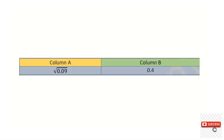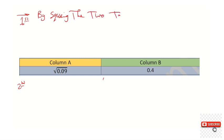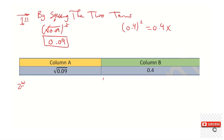Regarding question number five: comparing root 0.09 and 0.4. If one term has a root and the other doesn't, there are two solutions. The first solution is by squaring both terms. Squaring root 0.09 gives 0.09, and squaring 0.4 gives 0.4 times 0.4, which after two decimal places is 0.16. And of course 0.16 is greater than 0.09.